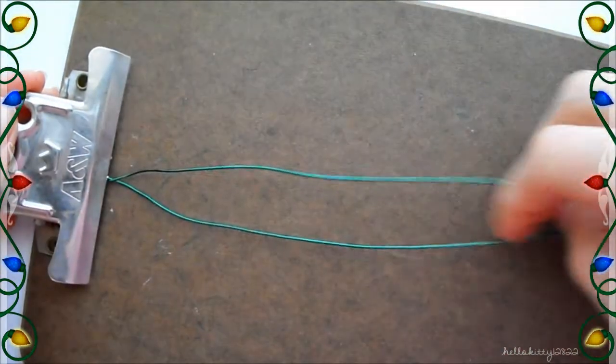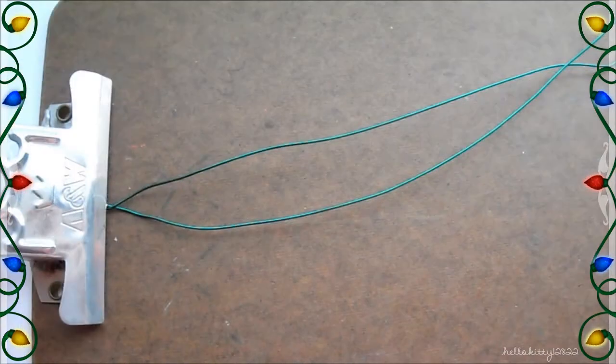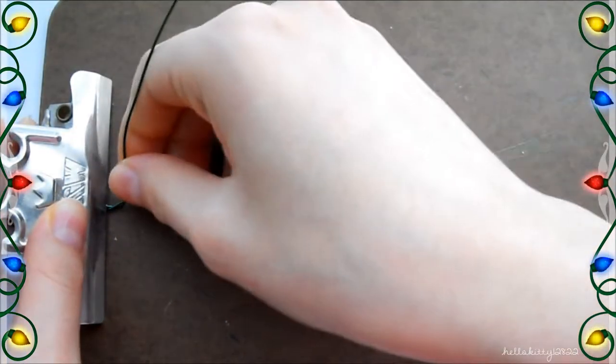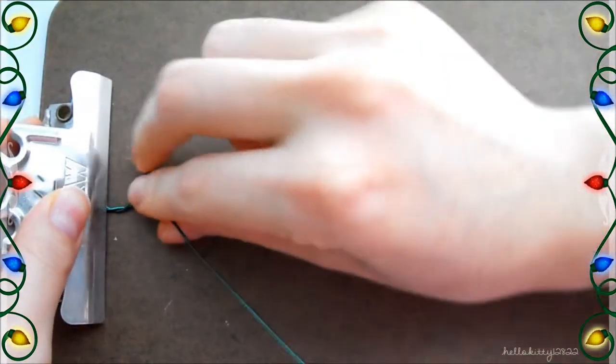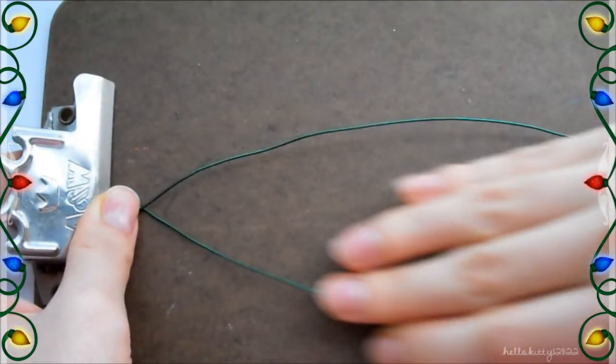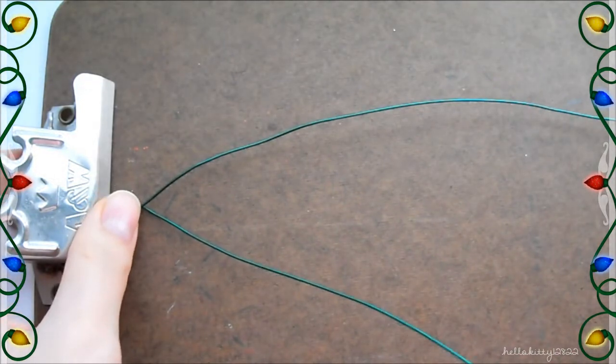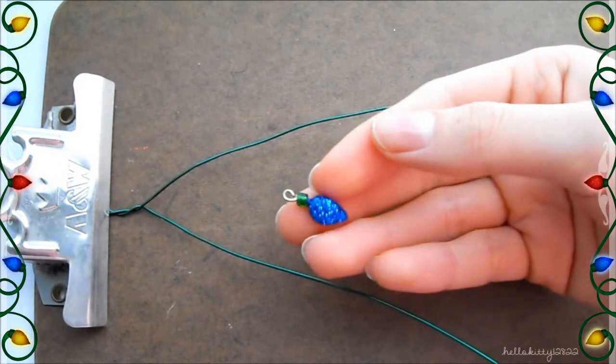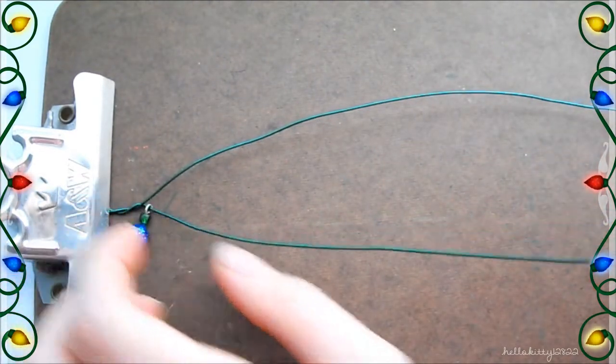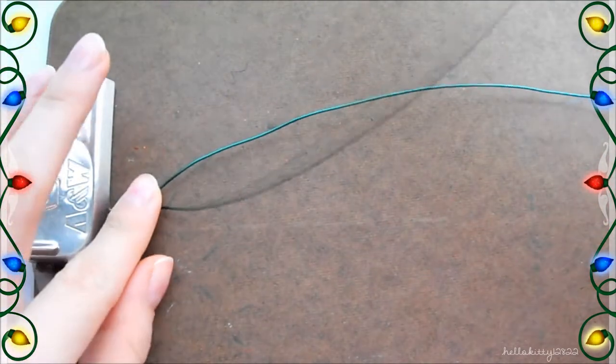And I'm just going to clamp that down on my wires so that it stays put. Now I'm going to twist these two pieces together. And I'm going to take some of my little light bulbs and slide that through. Then twist the two wires together again.